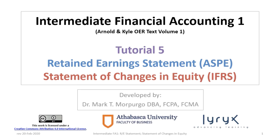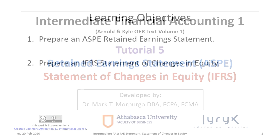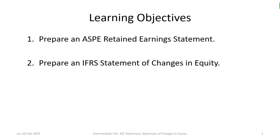Welcome to Intermediate Financial Accounting 1 Tutorial 5, where we will review how to prepare an ASPE statement of retained earnings and an IFRS statement of changes in equity. There are two learning objectives: one is to prepare an ASPE retained earnings statement, and two is to prepare an IFRS statement of changes in equity.